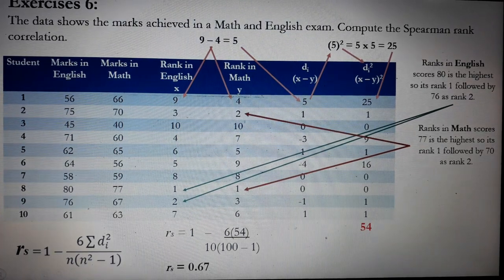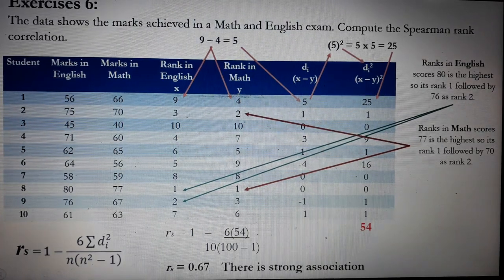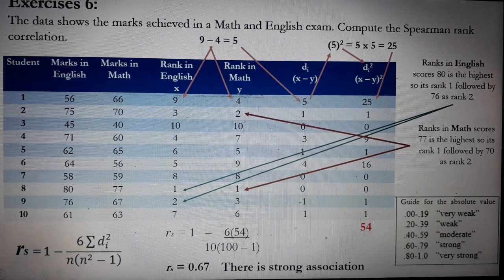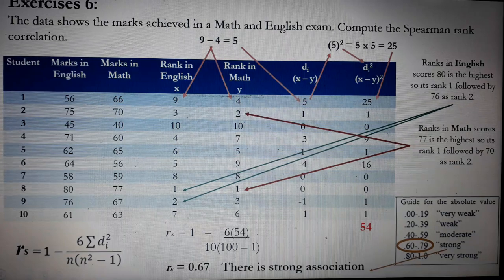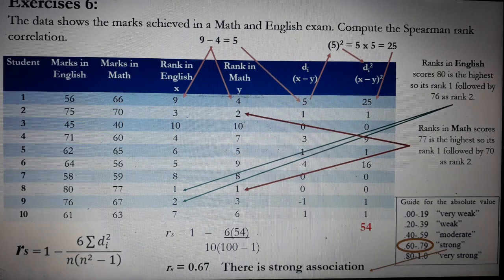So how do we interpret the 0.67? There is a strong association from our table earlier. It's 0.67. So we have strong association. And that's it for this Spearman-Rank correlation coefficient.